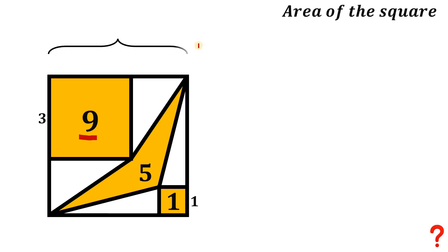Let x be the side of this big square. So the area of the big square is just x squared. If we find the value of x, square it, and that's the area of the big square. The question is: how do we get the value of x? This side is 3, so since the whole thing is x and we have here 3, this side length measures x minus 3.